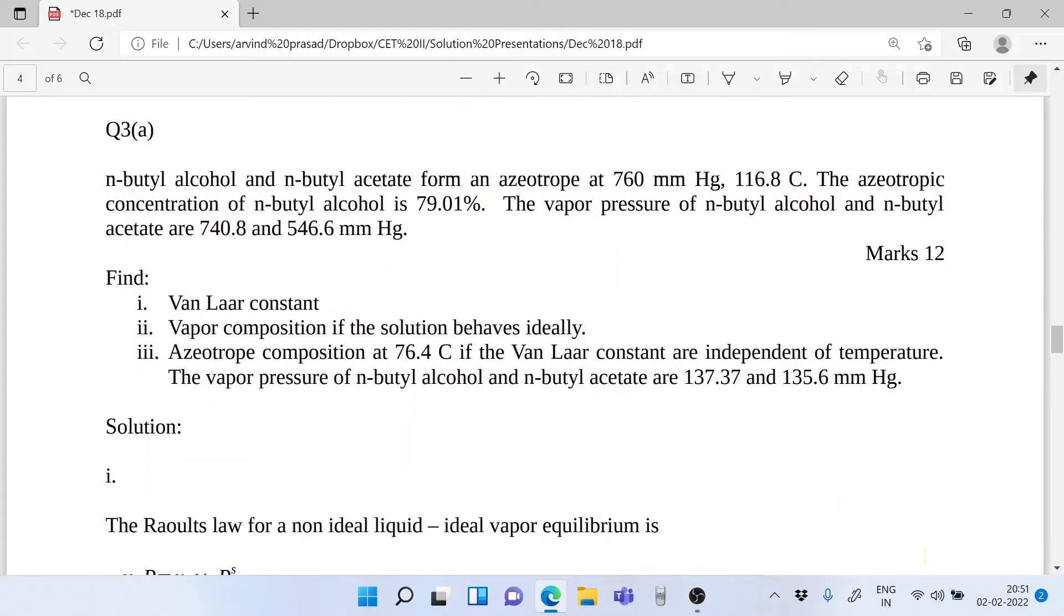The problem, I'll read it out: n-butyl alcohol and n-butyl acetate form an azeotrope at 760 mmHg and 116.8 degrees Celsius. The azeotropic concentration of n-butyl alcohol is 79.01 percent. The vapor pressure of n-butyl alcohol and n-butyl acetate are 740.8 and 546.6 mmHg. Find: first, the Van Laar constants; two, the vapor composition if the solution behaves ideally; and the third one is azeotrope composition at 76.4 Celsius if the Van Laar constants are independent of temperature.